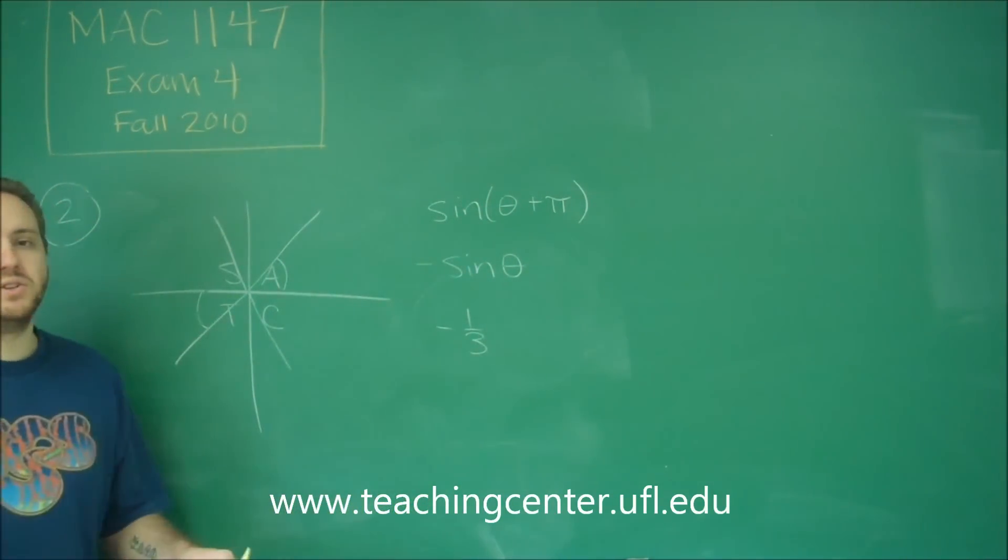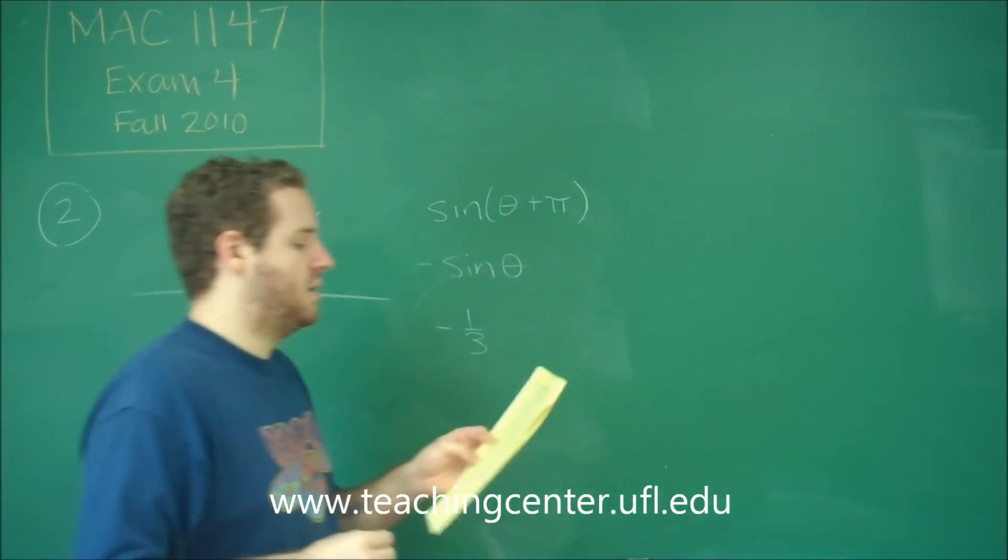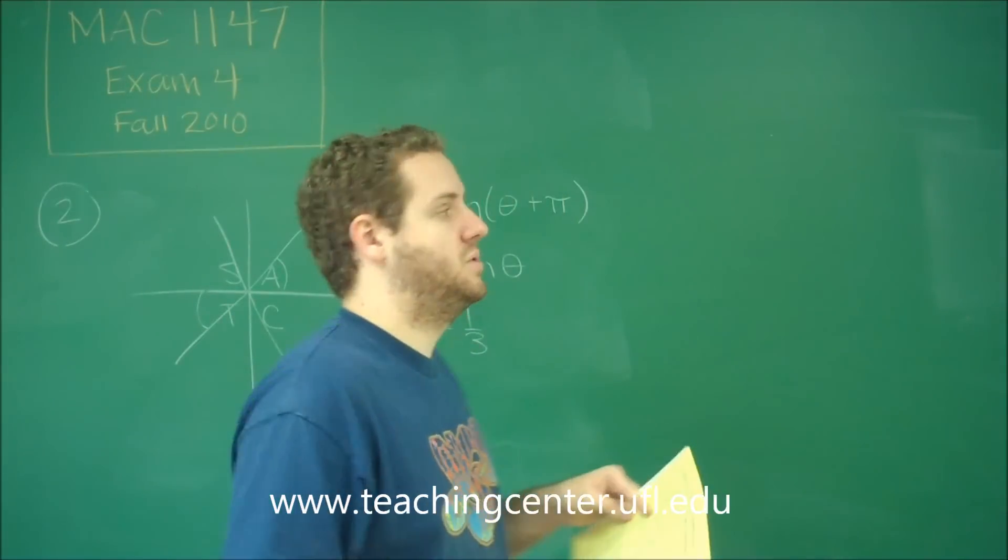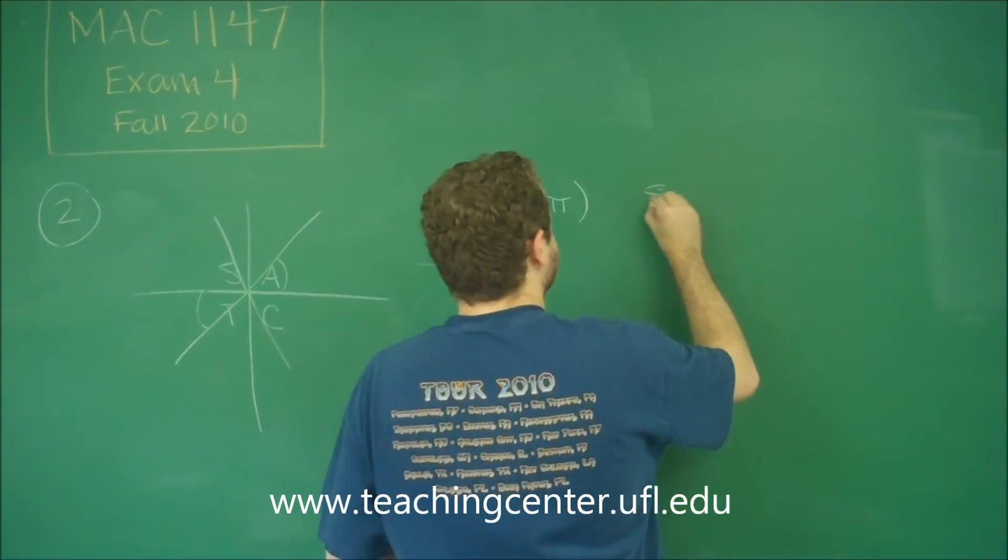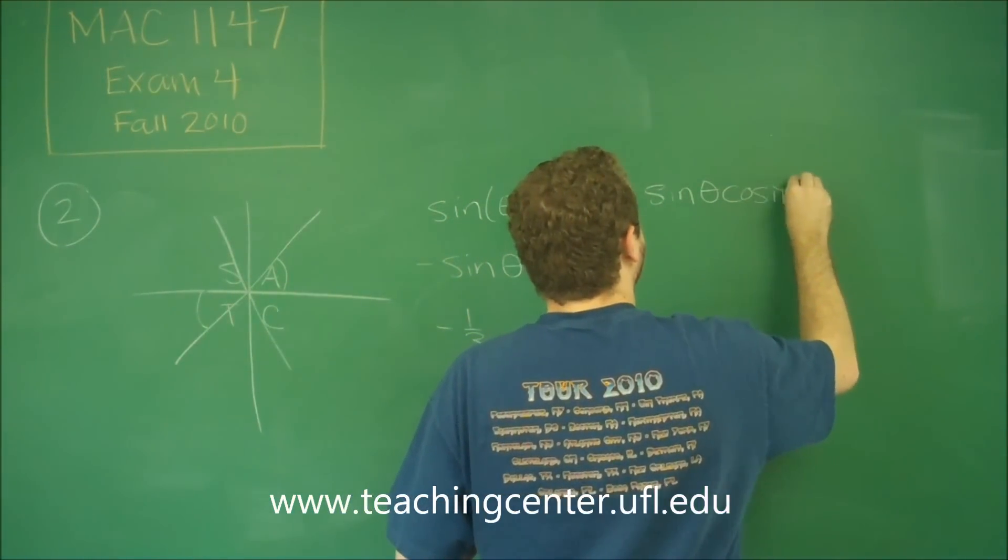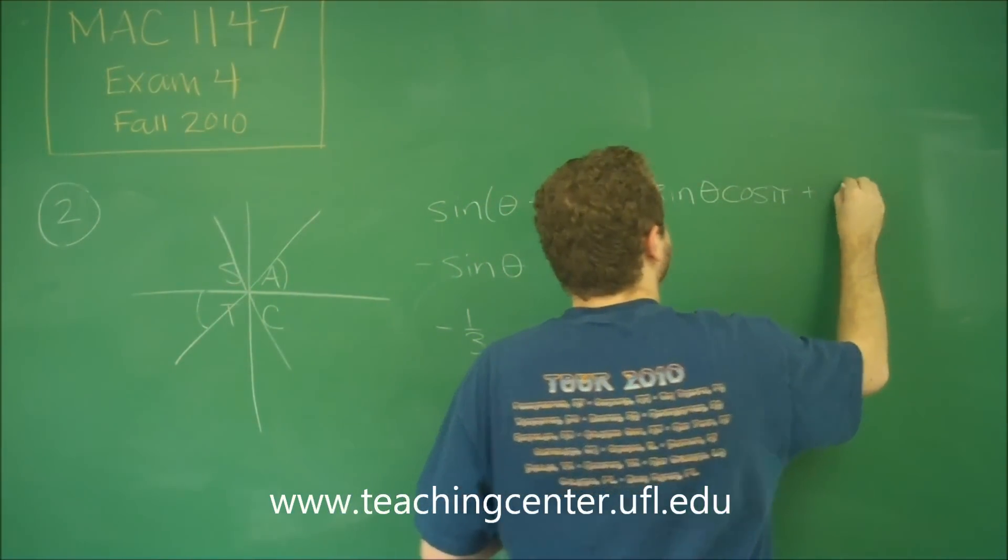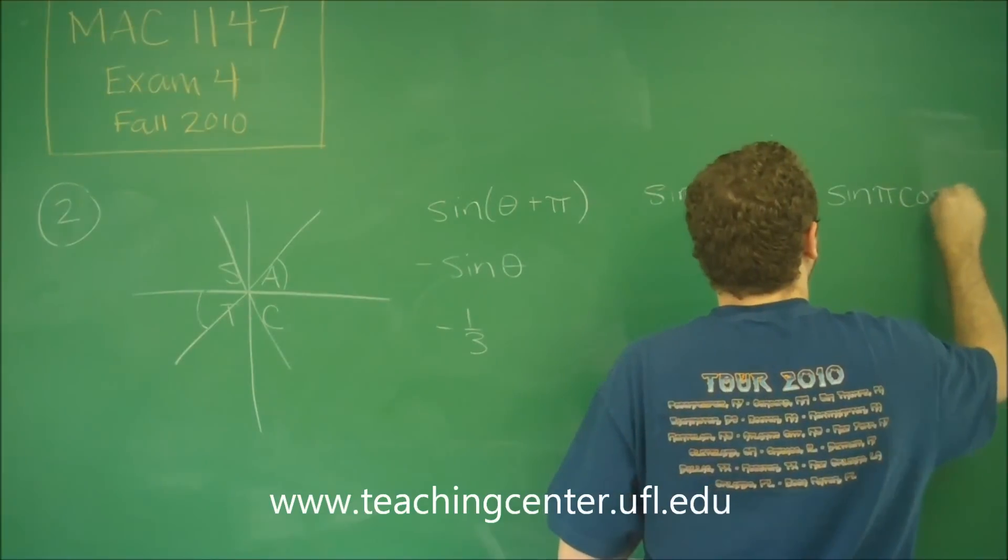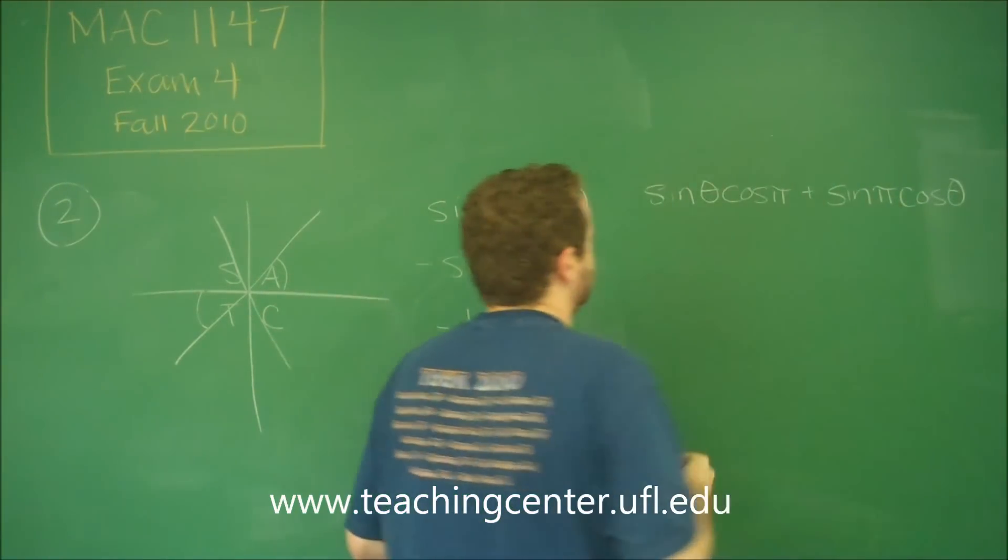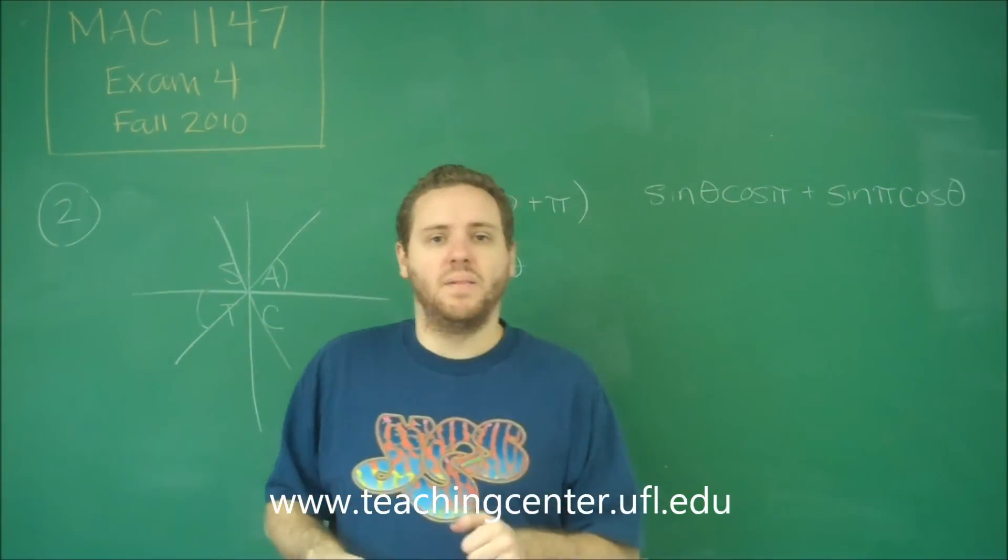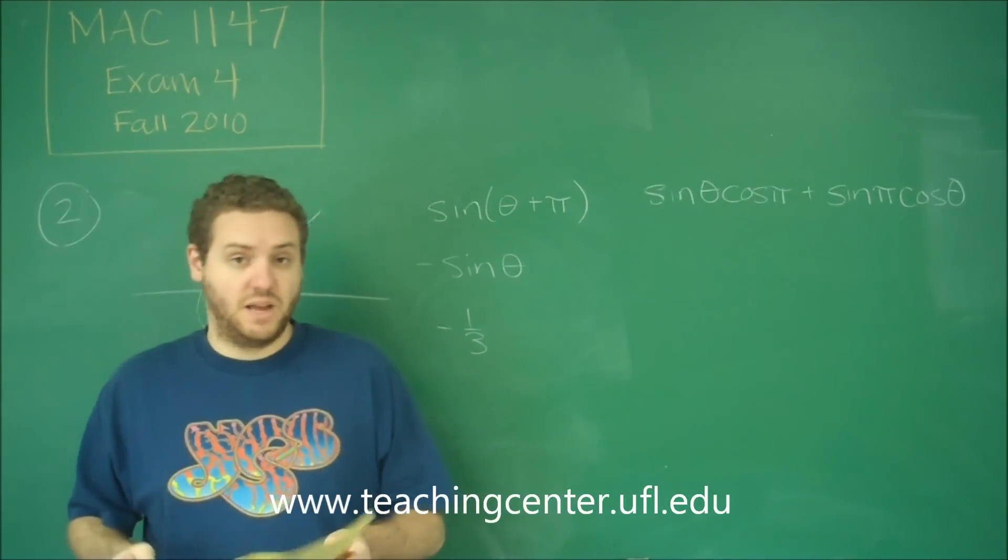So let's see how you could do that also with the sine addition angle formula. Here we have sine theta plus pi, that's like sine a plus b. So when you do that, you're going to get sine theta cosine pi plus sine pi cosine theta. So that's sine a cosine b plus sine b cosine a. That's what you do for the sine addition angle formula.